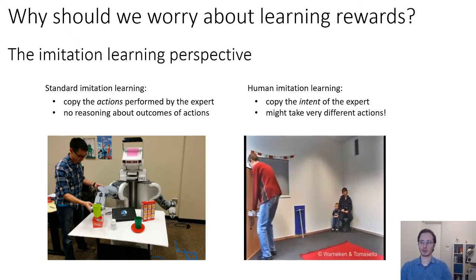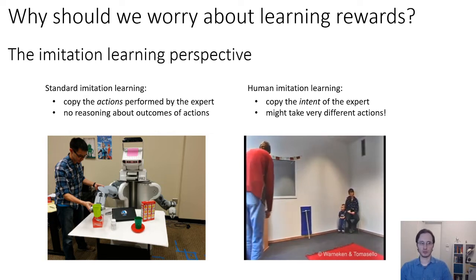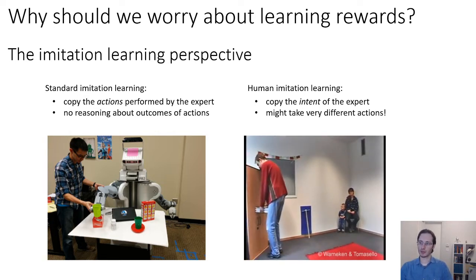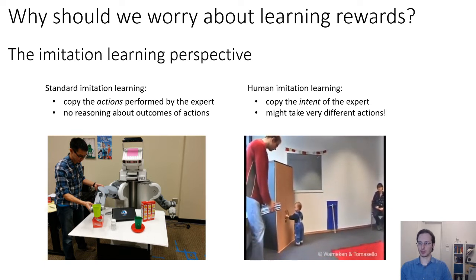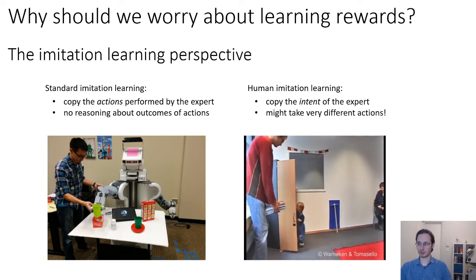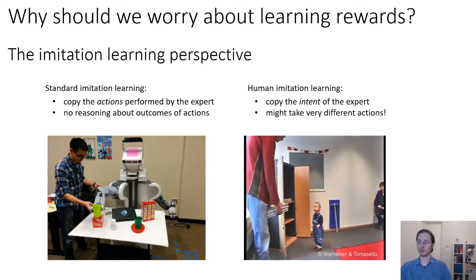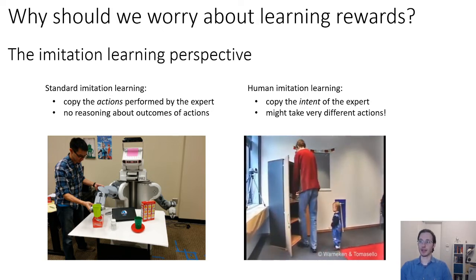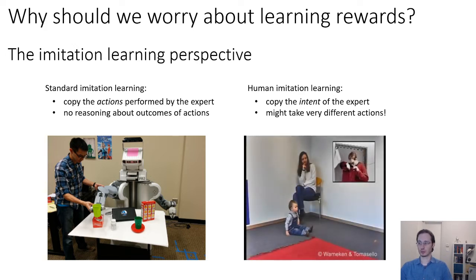Here is a nice video that illustrates this point. This is a psychology experiment. The subject is the child in the lower right corner of the frame. If you put yourself in the place of that child, imagine what you would do upon seeing this. You would infer the intentions of the experimenter here, and you would not perform the action that the experimenter is performing. You would instead perform the action that leads to the desired outcome — the outcome that you inferred is the outcome they are going for.